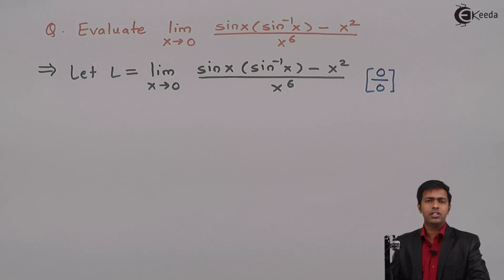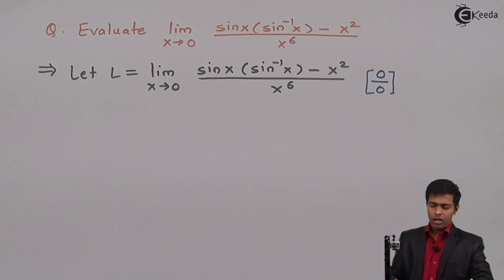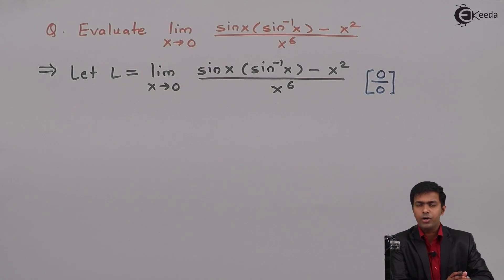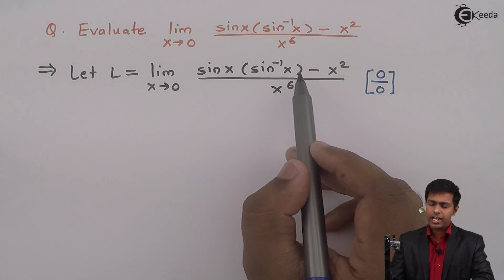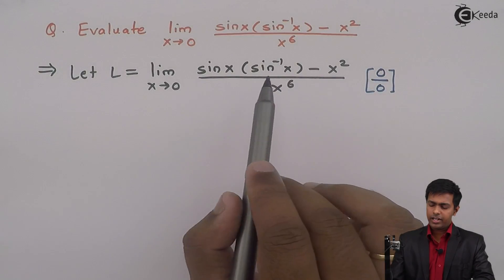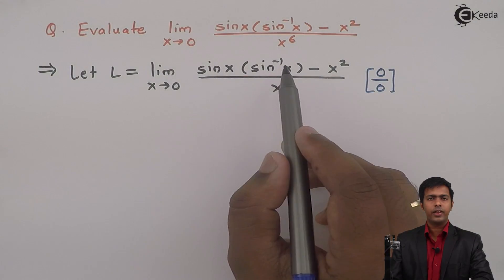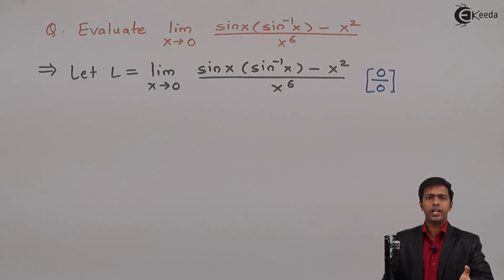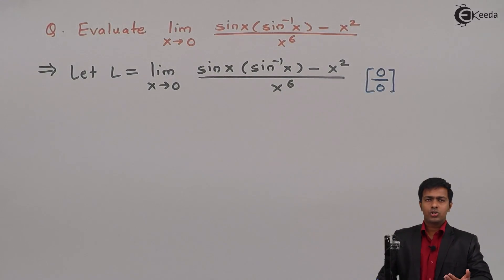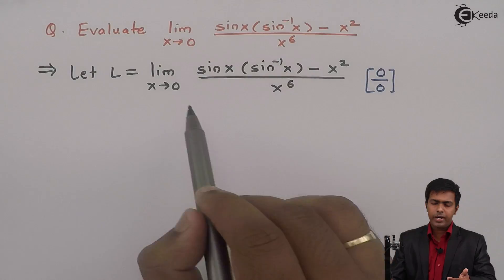So we can apply L'Hôpital's rule. By L'Hôpital's rule we find the derivative of numerator and denominator separately. However, if you observe the numerator, we have sin(x) into sin inverse(x), and finding the derivative of this product requires the product rule, giving us two terms — plus the third term from minus x squared. So the number of terms increases and evaluating the limit becomes complicated.